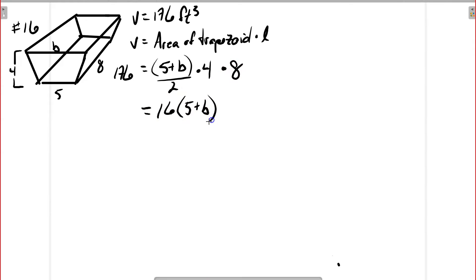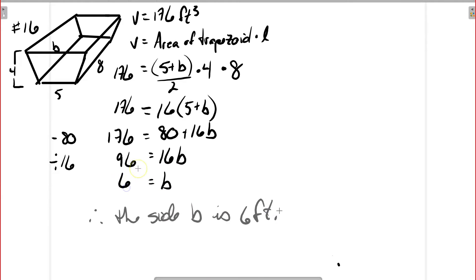16 times 5 is 80, 16 times b is 16b. I'm going to subtract 80 from both sides, so I end up with 96 equals 16b. Then I divide by 16, and b equals 6 feet. The missing side for the top of the trough is 6 feet in length.